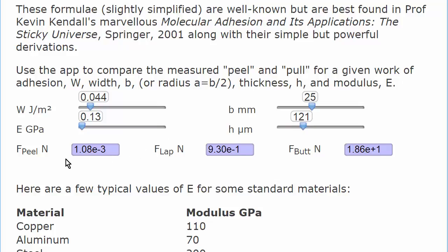then the force needed to peel it apart is about one millinewton. The force required for the lap joint is close to one newton, and for the butt joint, it's almost 20 newtons. So same material pulled in different ways, and you get very different forces required. So adhesion is a property of the system.